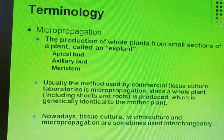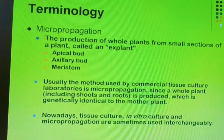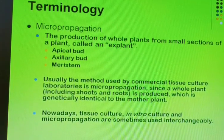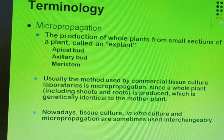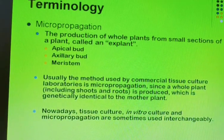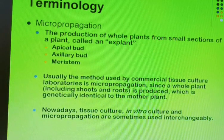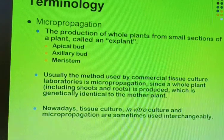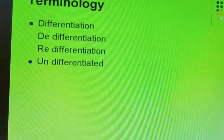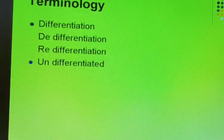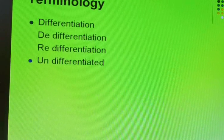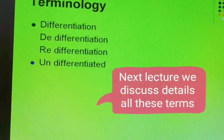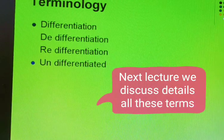Nowadays, tissue culture, in vitro culture, and micropropagation are sometimes used interchangeably. We can use both terms — in vitro culture of banana and micropropagation of banana refer to the same technique under plant tissue culture. Some very important terms are: differentiation, de-differentiation, re-differentiation, and un-differentiation. These four terms can be explained with a graph or photograph.